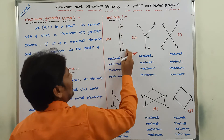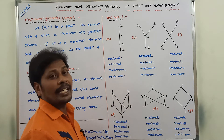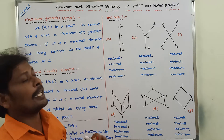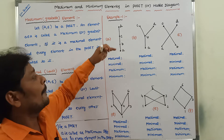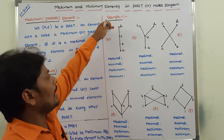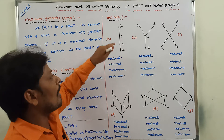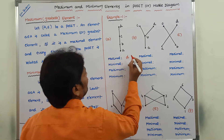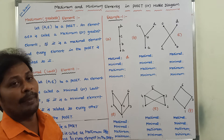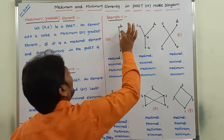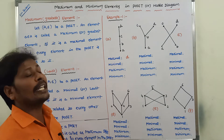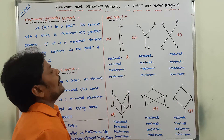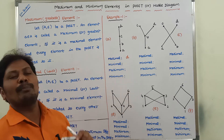In the downward direction in the Hasse diagram, the relation is not satisfiable. So D is not related to C, C is not related to B, B is not related to A, D is not related to B, and D is not related to A. Hence, we can say that D is called a maximal element. Element D does not have an immediate successor in the upward direction, hence D can also be called a maximal element.